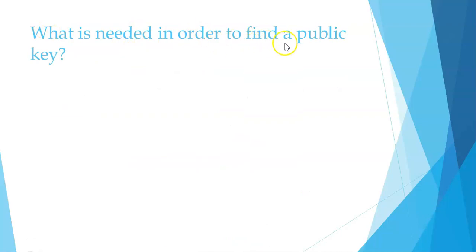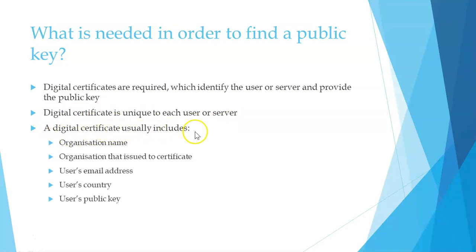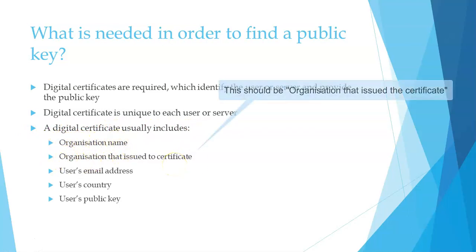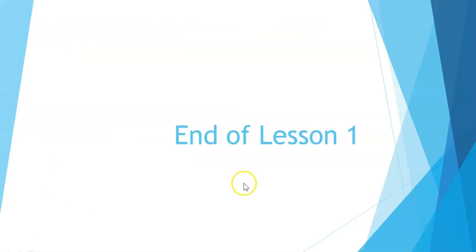To find a public key, digital certificates are required, which identify the user or server and provide the public key. Digital certificates are unique to each user or server and usually include the following information: the organization name, the user's email address, the user's country, and the user's public key. The public key is made known through the digital certificate.